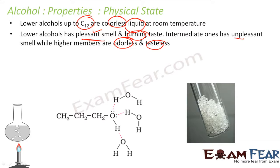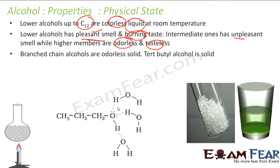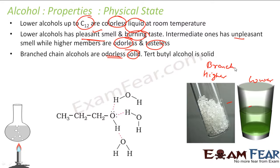If you go higher, alcohols become solid. These are the solid ones — they don't have any smell. Also, branched alcohols are not having any smell and they are solid. So alcohols can be liquid (the lower ones) or solid (the higher or branched ones). For example, tertiary butyl alcohol is a solid.